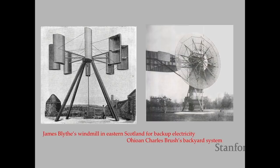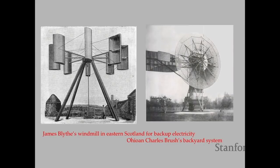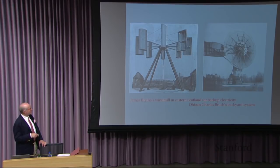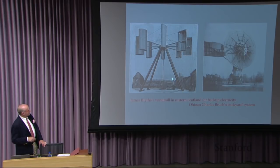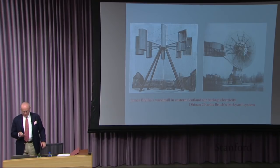Early wind machines were rather quaint and amazing. There's a man mowing the lawn there to give you a sense of the scale — this one was built privately by a wealthy man in Ohio with a basement full of lead-acid batteries to store the energy, used to light his house and run his machinery. Another was built in Scotland by a Scottish physicist and used as backup power for what was then called a lunatic asylum, operated for some 27 years very successfully to generate electricity from wind.